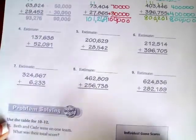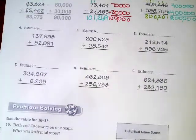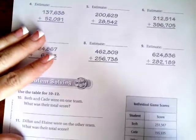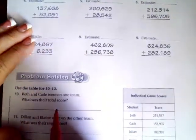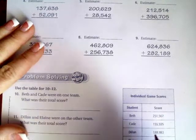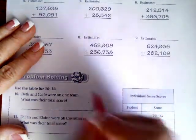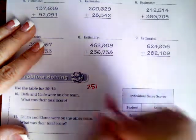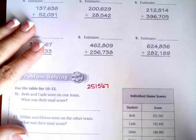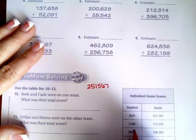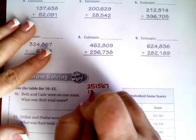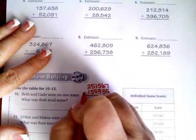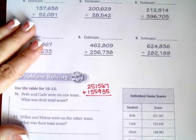All right, guys, I'm going to have you guys go all the way through number nine. We're going to go down to number 10 and see what that one is. So it says Bess and Cade were on one team. What is their total score? So we need to add those two numbers. So 251,567 and we're going to line up our columns ever so carefully so that we have 155,935. And we're going to add.